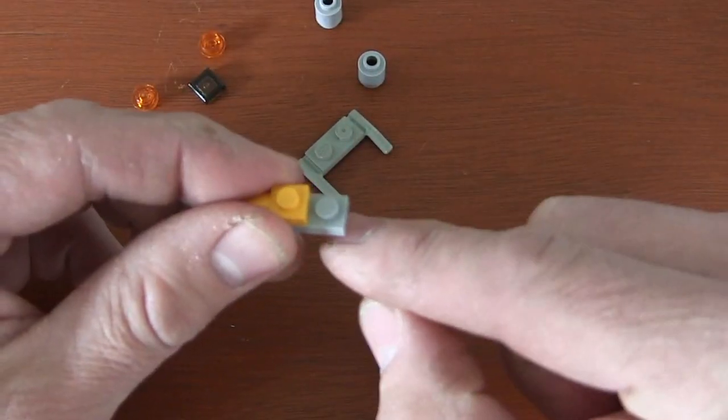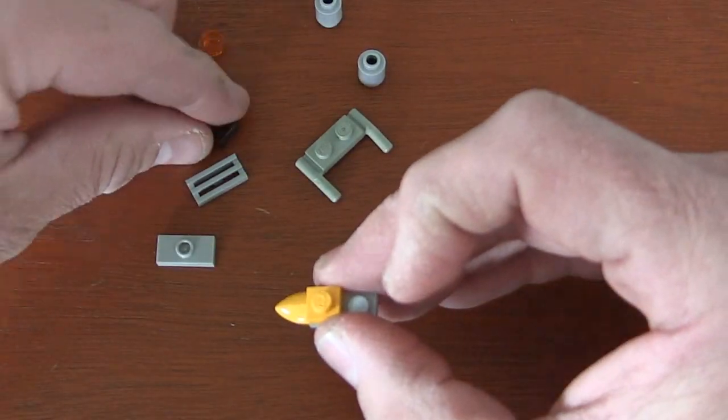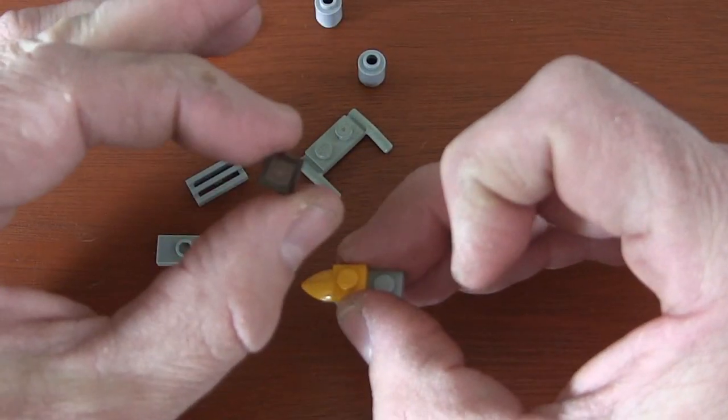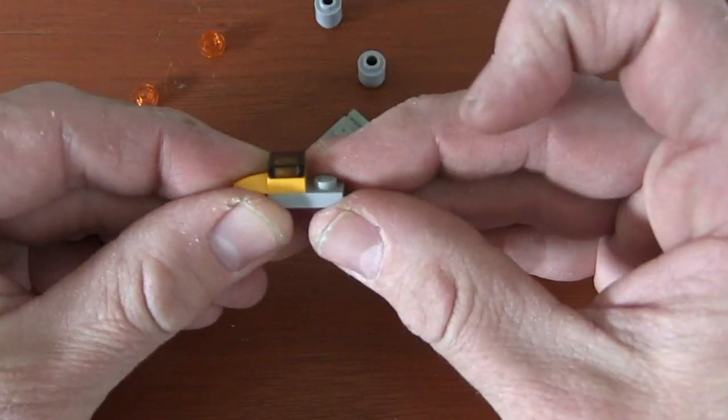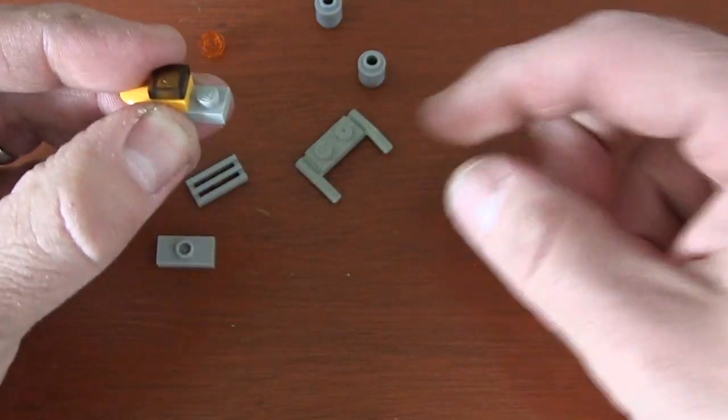You can use whatever color you want. On top of that tooth piece I just put in, I'm gonna get a 1x1 translucent black tile and put that on top like that. Now right here we've got that back stud.